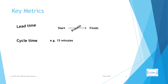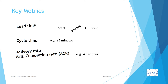Cycle time, on the other hand, is the average time between pieces emerging from a given process. If you invert it, you get the delivery rate or average completion rate, also called ACR. If you know the delivery rate and the work in progress, or WIP, you can calculate lead time. Lead time equals work in progress divided by the delivery rate — this equation is known as Little's Law.